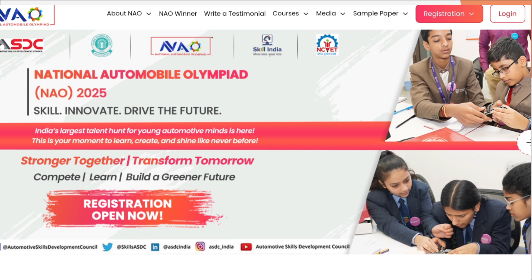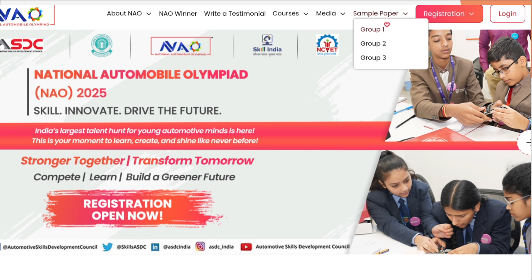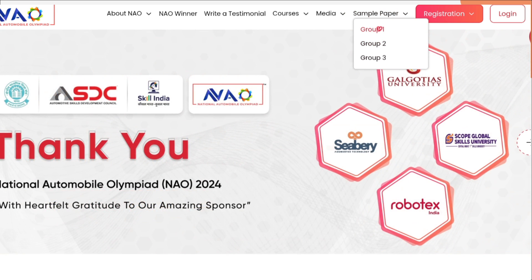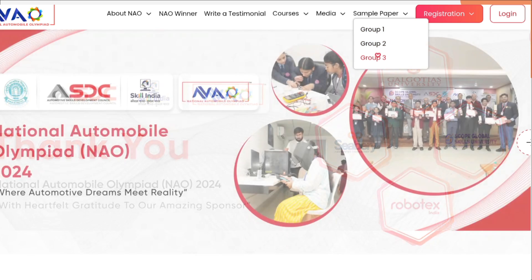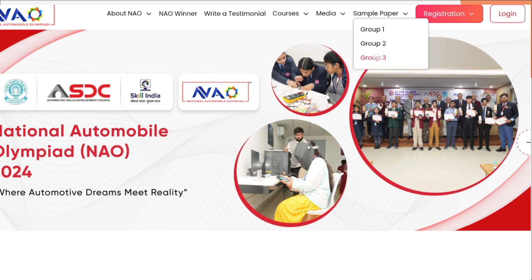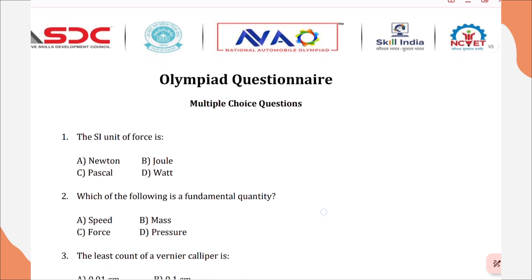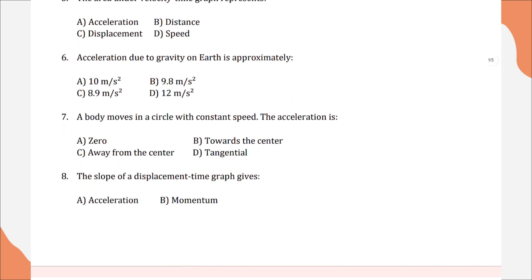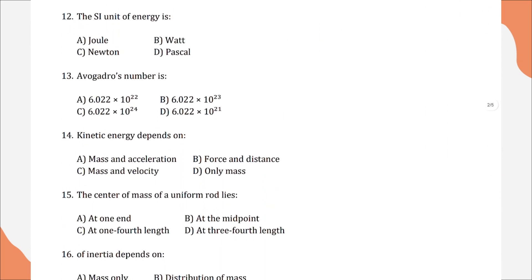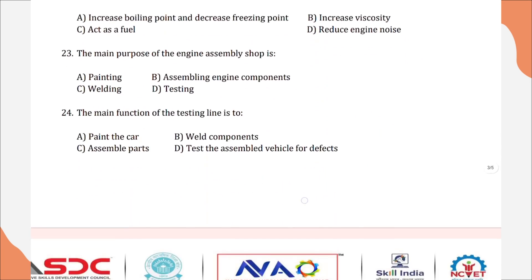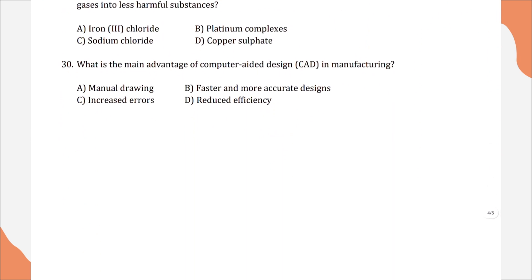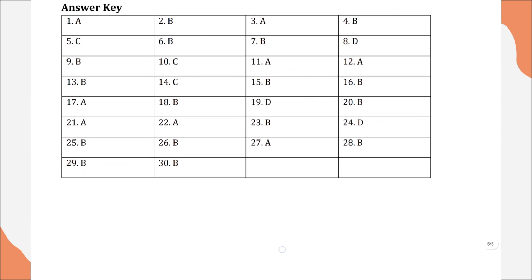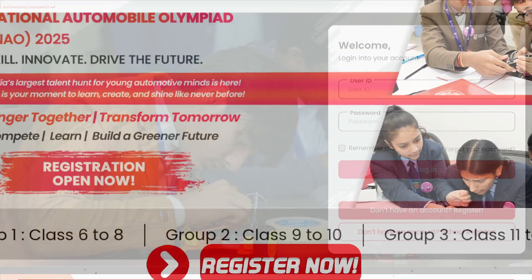Students can also download sample papers for this Olympiad. As you can see on the top, 'Sample Paper' is written. Just click on the dropdown list and select your group according to your class. For example, I will select Group 3 — as you can see, this is a 5-page sample paper for Group 3 which I downloaded from the official website. It contains 30 questions with an answer key. That's all for today's video.